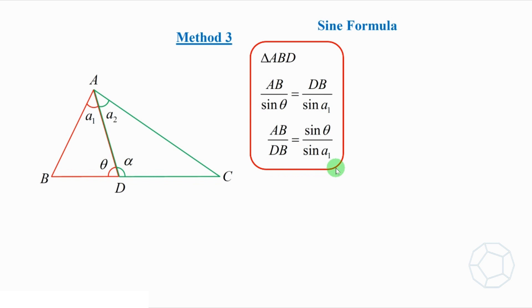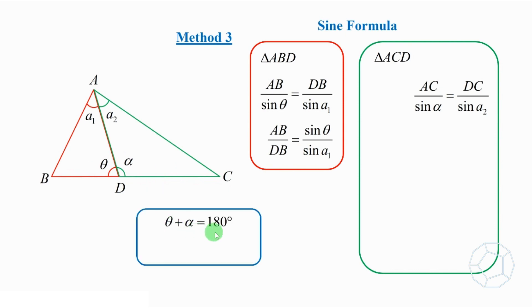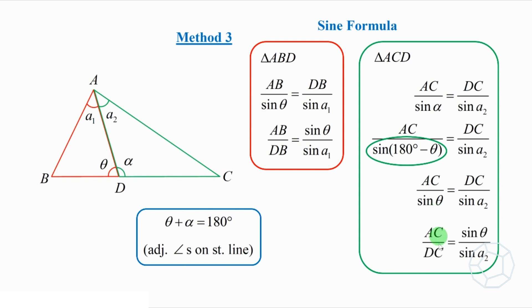Let's do the same for the green triangle ACD. AC over sine alpha is equal to DC over sine A2. Because theta and alpha lie on the same straight line, therefore, the sum of them is equal to 180 degrees. The reason is adjacent angles on the straight line. Therefore, on the left-hand side of the equation, alpha is equal to 180 degrees minus theta. Now, this sine term can be simplified to sine theta. We arrange the terms, we get AC over DC is equal to sine theta over sine A2.